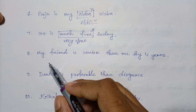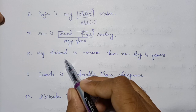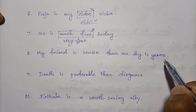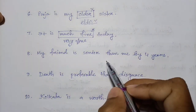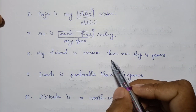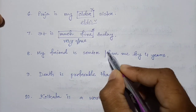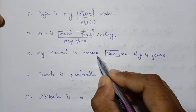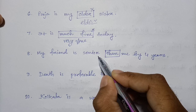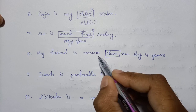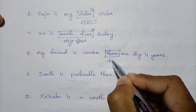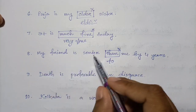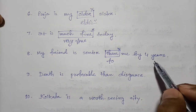Question eight: 'My friend is senior than me by four years.' You should know that words like senior, junior, interior, prior are followed by 'to,' not 'than.' So the correct sentence is: 'My friend is senior to me by four years.'